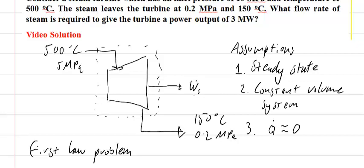I know that this is a first law problem. I know my inlet conditions, my outlet conditions, and I'm being asked about how much work is produced, so it's a first law problem.